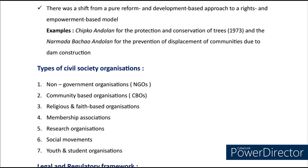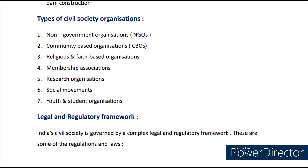Coming to the types of civil society organizations, it includes NGOs (non-governmental organizations), CBOs (community-based organizations), religious and faith-based organizations, membership associations, research organizations, social movements, and youth or student organizations.